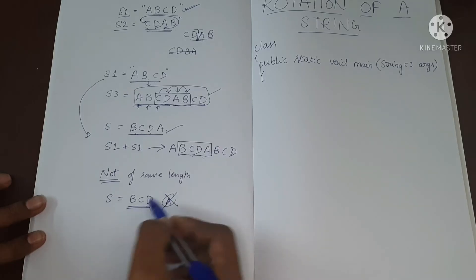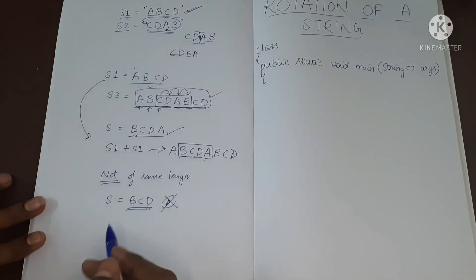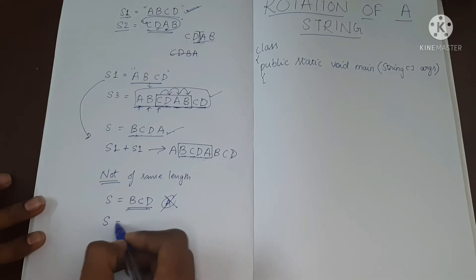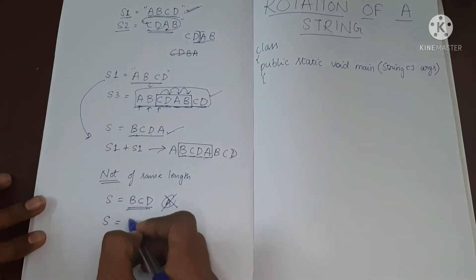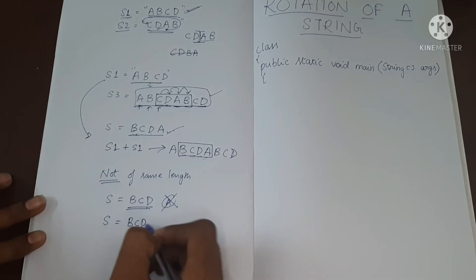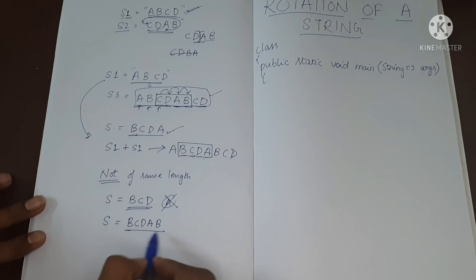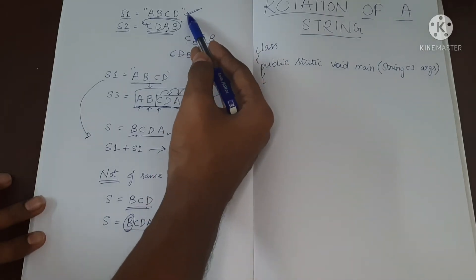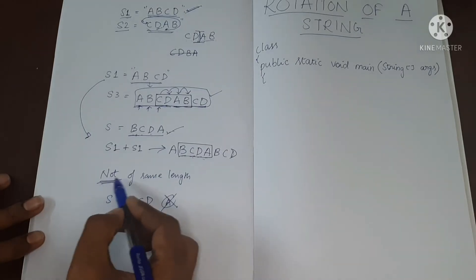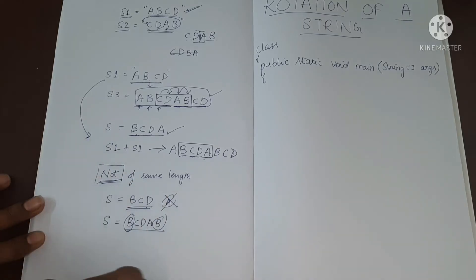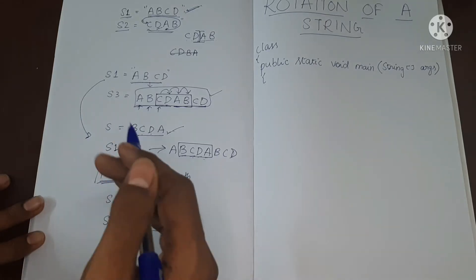So let's say we have another, which is of greater length than S1. Say we have B, C, D, A, B, something like that. So this string has two B, but our initial string has only one B. So any two strings whose length are not same can never be a rotation of each other.